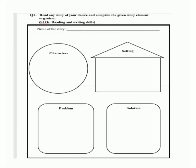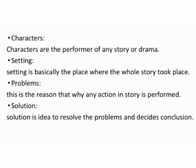At page number 12, we are having our first question and that is about reading and writing skills. It means that you will read any story of your choice and then you will write according to your ideas in an innovative way. Our first question is: read any story of your choice and then complete the given story elements organizer. Before going to start question number 1, first we will try to discuss these elements that are asked. Let's have a look at these elements.